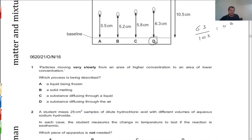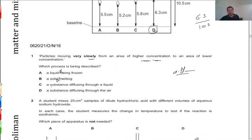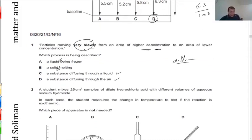A particle moving very slowly from an area of high concentration to low concentration. Condensation decreases distance — not diffusion. Liquid being frozen — not diffusion. Solid melts — not diffusion. Substance diffuses through liquid — yes, this is diffusion. Substance diffuses through air — also diffusion. But it says very slow. Diffusion in air is very fast because there is large space between particles. Therefore the answer is diffusion through liquid.